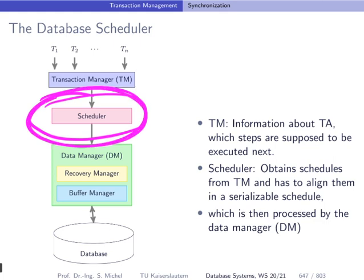The scheduler is receiving these actions from the transaction manager and has to decide if the action can be forwarded to the data manager. And this is only forwarded when these actions are complying with a certain class of schedules this scheduler was designed for. And again, we will look at conflict serializable schedules.